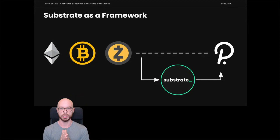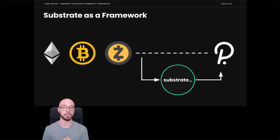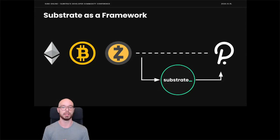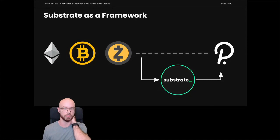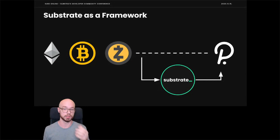A lot of blockchains have a lot of sameness to them. The thing that sets them apart is really just the state transition function — the piece of code that describes how to execute a block and go from one state of the world to the next. Together with insights from wanting on-chain governance in Polkadot, we realized we could build a really powerful framework around these primitives. So as we built Polkadot, we took a detour into building Substrate, and then built Polkadot within the Substrate framework.